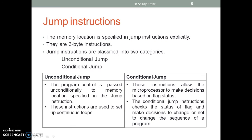Unconditional jump: the program control is passed unconditionally to the memory location specified in the jump instruction. These instructions are used to set up continuous loops. Conditional jump: these instructions allow the microprocessor to make decisions based on flag status. The conditional jump instruction checks the status of the flag and makes a decision to change or not to change the sequence of the program.